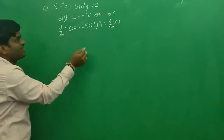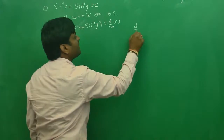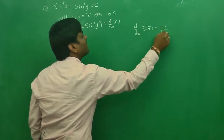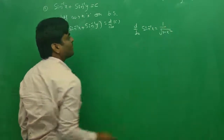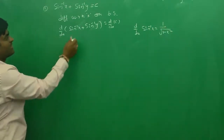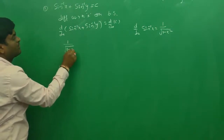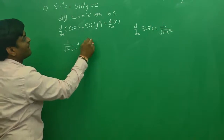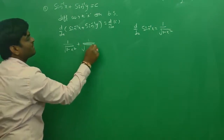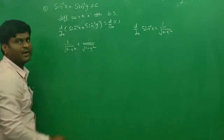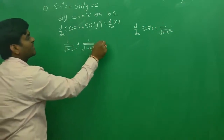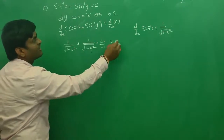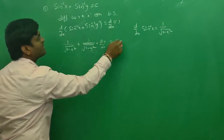We have the formula: d/dx of sin⁻¹x = 1 / √(1 − x²). So d/dx of sin⁻¹x is 1/√(1 − x²), plus d/dx of sin⁻¹y. Since y is a dependent variable, you get 1/√(1 − y²) · dy/dx. And d/dx of a constant is 0.